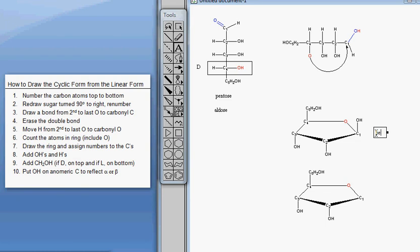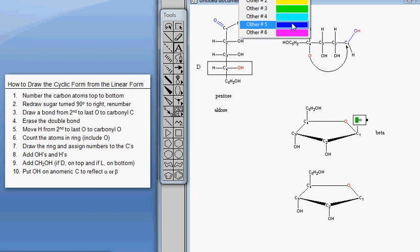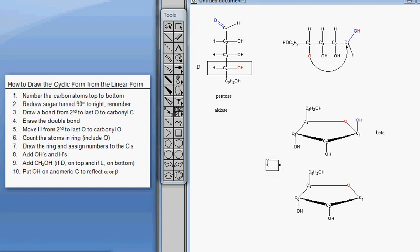If I make the OH up so that it is cis to my CH2OH, then we have beta. Both up is beta. They both start with B. Both up, B, beta. And just to let you know, this oxygen is my blue oxygen and this hydrogen is my red hydrogen, just so you know what happened to them.